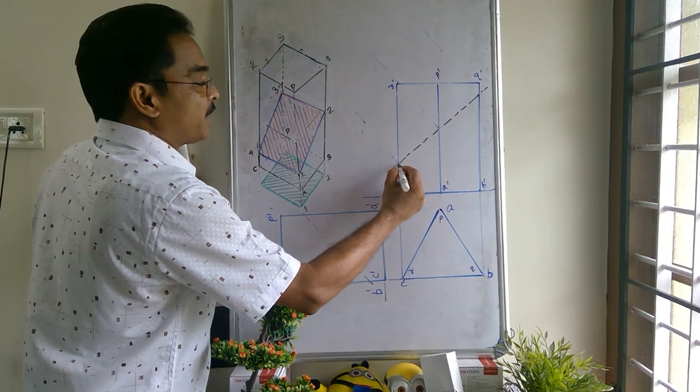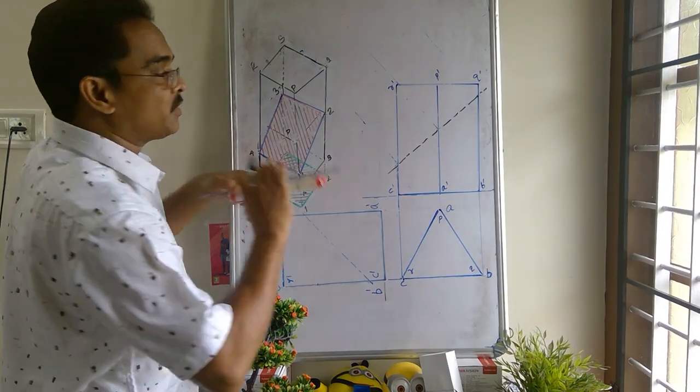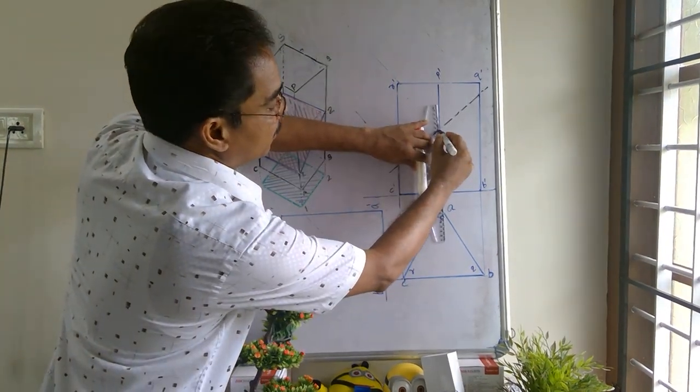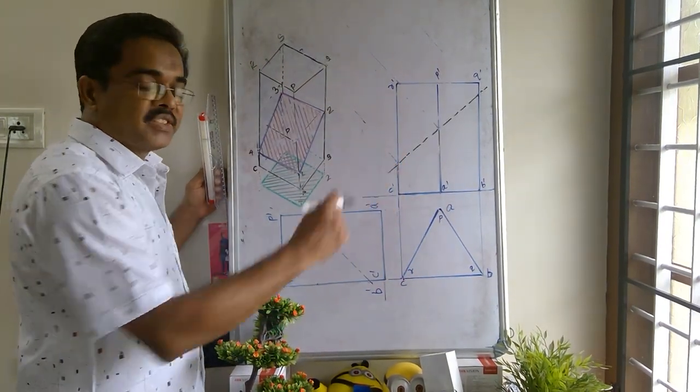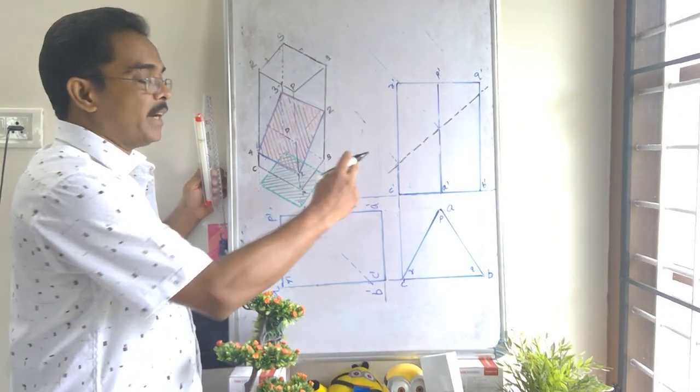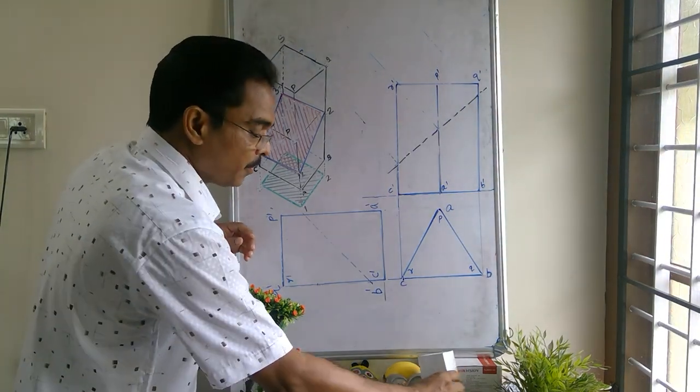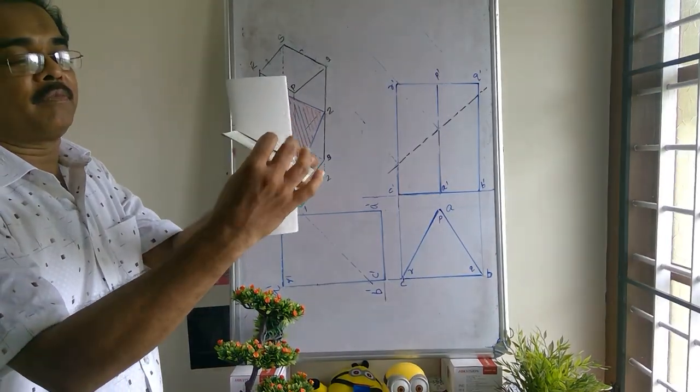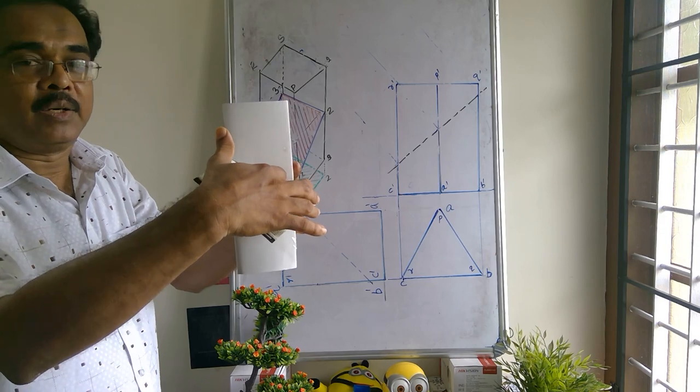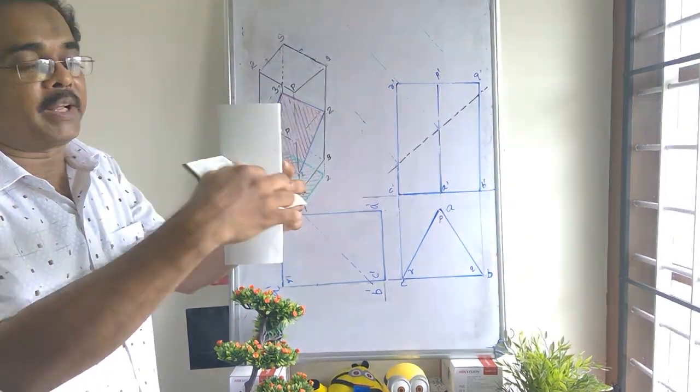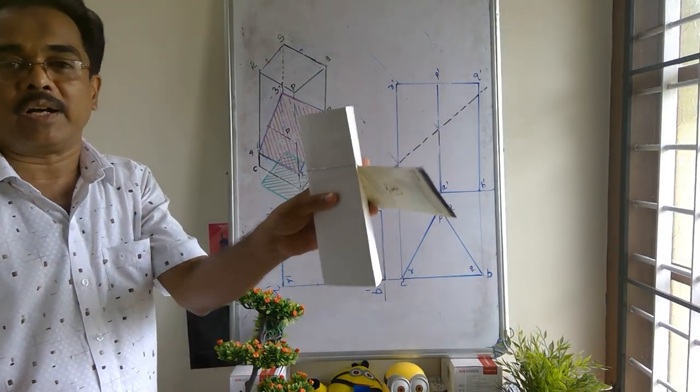And after that you should draw the portion below this cutting plane as dark lines. So this line should be darker. Now the third step is, identify the cutting points. What is cutting point? Cutting point is the intersection of the cutting plane with the edges. Here we can see that, in order to cut the solid fully, the cutting plane should cut the three longer edges of this triangular prism.